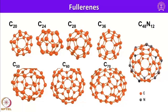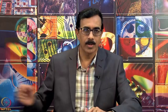Some important fullerenes include C20, C24, C28, C36, and also C70. These are some of the important fullerenes. Now, let us look into the reactivity of fullerene.